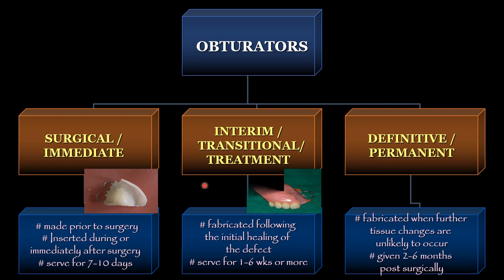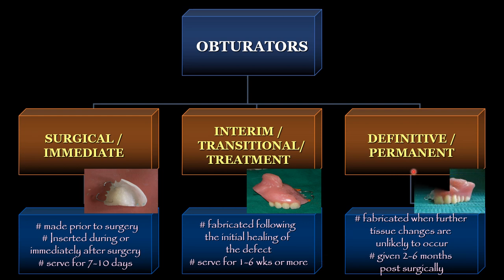The interim transitional or treatment obturator is fabricated following the initial healing of the defect. Once the initial healing is done, the impression is made for the interim obturator. They serve for one to six weeks or more depending on the healing process. The definitive or permanent obturator is fabricated when further tissue changes are unlikely to occur — meaning healing is satisfactory — and they are given two to six months post-surgically.